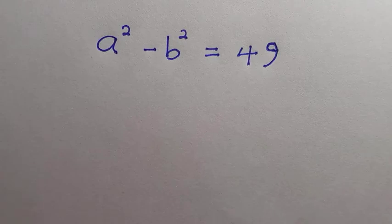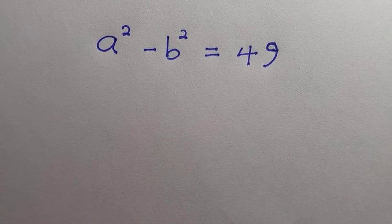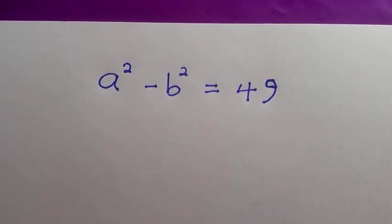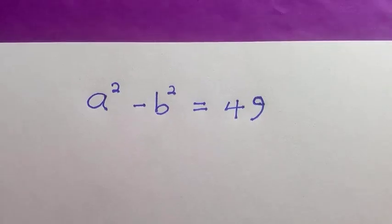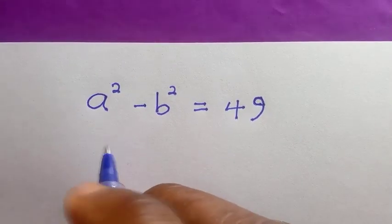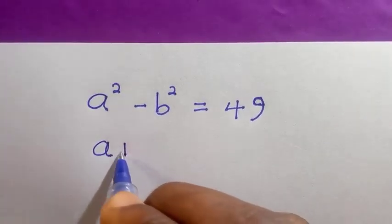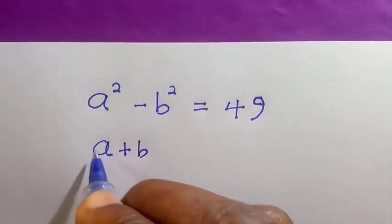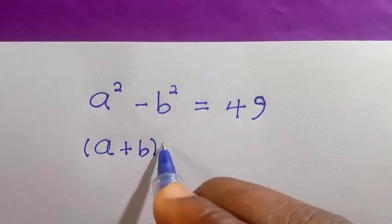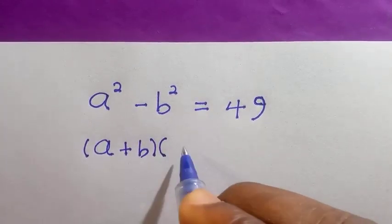Welcome to another video. Let's solve for the value of a and b given that a squared minus b squared equals 49. If you're just coming to our channel, please subscribe and turn on the notification bell. Here we have a plus b, bracket, and a minus b.